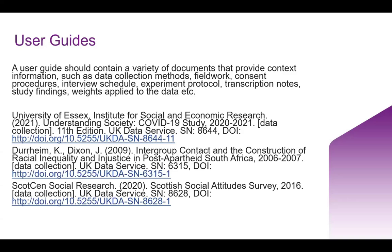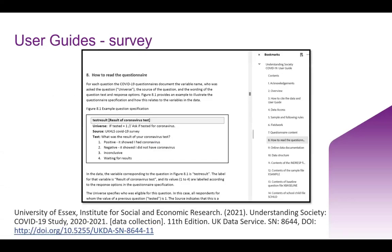User guides do look different across collections — there's no specific template as such, but rather it's tailored to what information is available and what the specifics are of the collection. I won't go through the three that are listed here, but do feel free to have an explore of the user guides — we've linked three of them that you can have a look at if you're interested in seeing some examples of three very different kinds of user guides. Within the collections curated by the UK Data Archive, these materials would be collated into a single PDF file. The user guide is then bookmarked — you can see on the right side of the screenshot the bookmarks tell you what materials are available within that user guide.